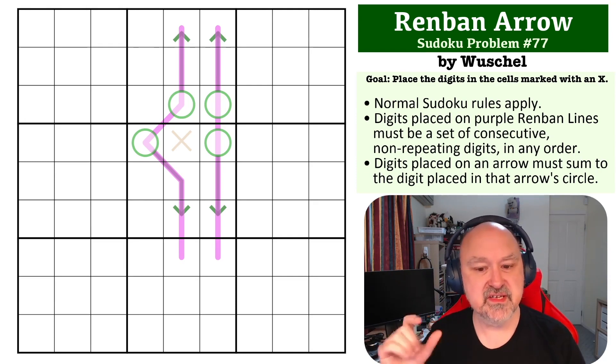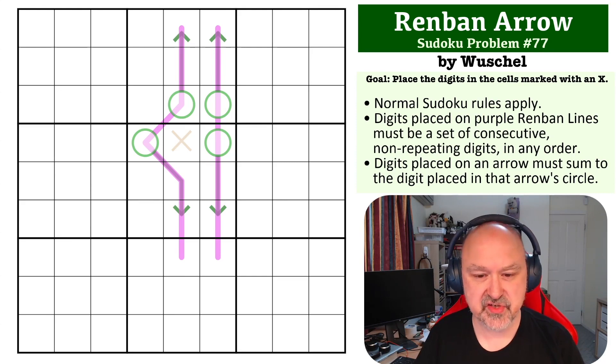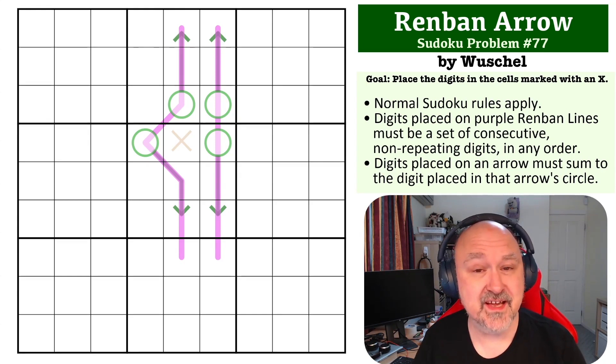And on the arrows, the digits that are placed on the arrow must sum to the digit in that arrow circle. The digit that you need to figure out in this puzzle is the digit in the cell with an X, and that's the only digit that you need to figure out. There is a link below to where you can get this problem so you can try it out for yourself. I will wait for a couple of seconds so you can pause the video, give this one a try, and then I will be back to explain how this one works.